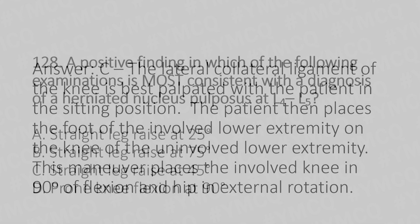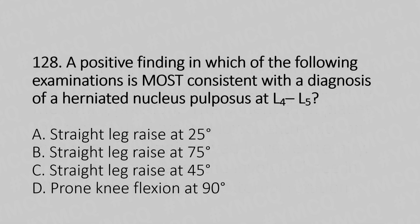Let's move to question number 128. A positive finding in which of the following examinations is most consistent with the diagnosis of herniated nucleus pulposus at L4-L5? Option A: straight leg raise of 25 degrees. Option B: straight leg raise of 75 degrees. Option C: straight leg raise of 45 degrees. Option D: prone knee flexion of 90 degrees.